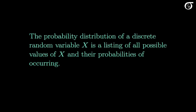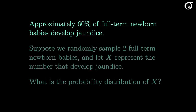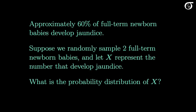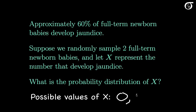Approximately 60% of full term newborn babies develop jaundice — a yellowing of the skin and whites of the eyes, usually a mild temporary condition in newborns. Suppose we randomly sample two full term newborn babies, and we let x represent the number that develop jaundice. Then x is a random variable, and we might wish to know its probability distribution. We could have either 0, 1, or 2 babies with jaundice, so the possible values of x are 0, 1, and 2.